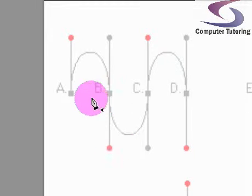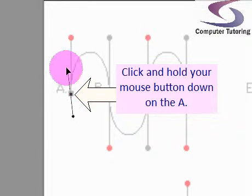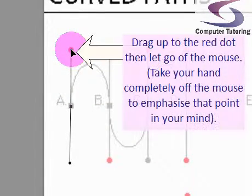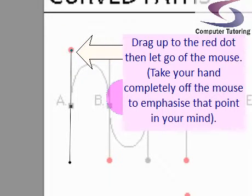If you're in any doubt, have a quick watch of this. So I'm going to go over the A, click and hold my mouse button down, drag up to the red dot, let go. Make sure you let go of the mouse. In fact, I've taken my hands completely off the mouse at this time.